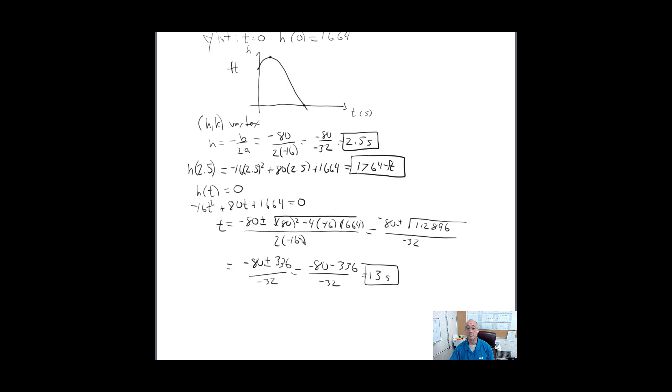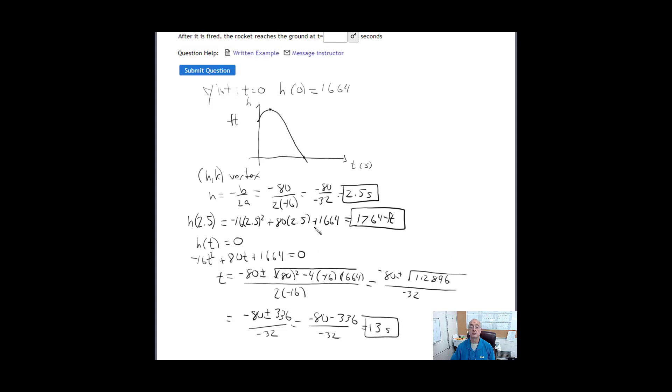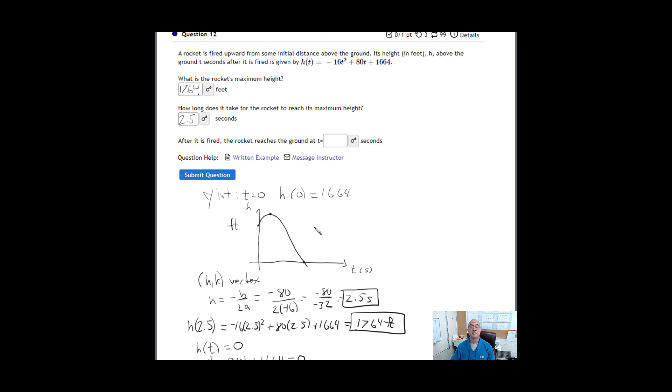So, our rocket, when we fire it, it's going to reach a maximum height of 1,764 feet in 2.5 seconds, and it's going to reach the ground at t equals 13 seconds. Alright, I hope this helps. Any questions, please ask. Thanks.